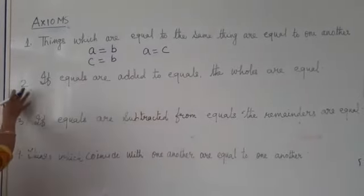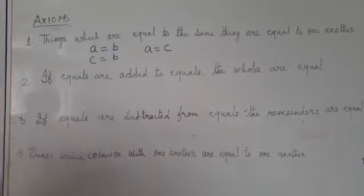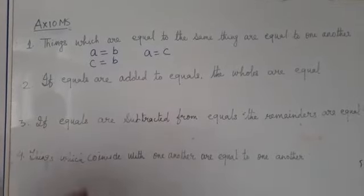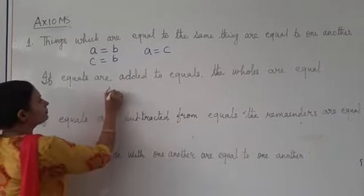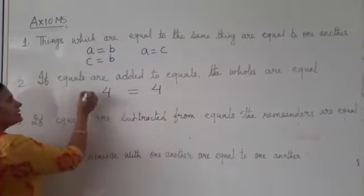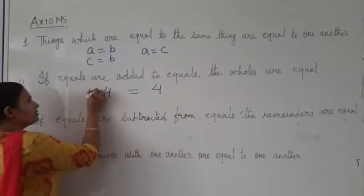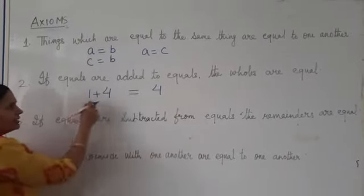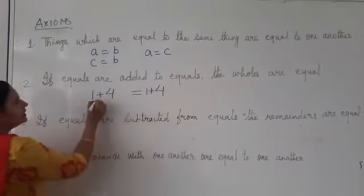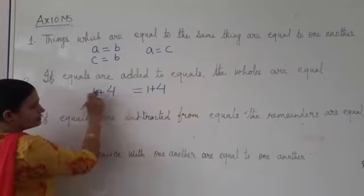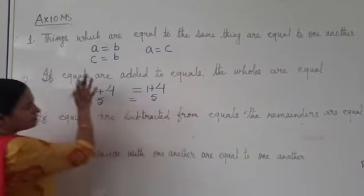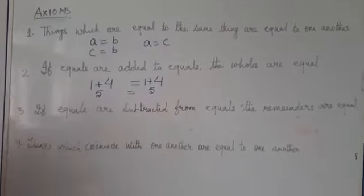Now, the second axiom is if equals are added to equals, the wholes are equals. Let's take one number. Four. Now, equals are added to equals. So I can add one this side and you can add one this side also. The whole, that is the result we are getting is equal. So this is our second axiom.